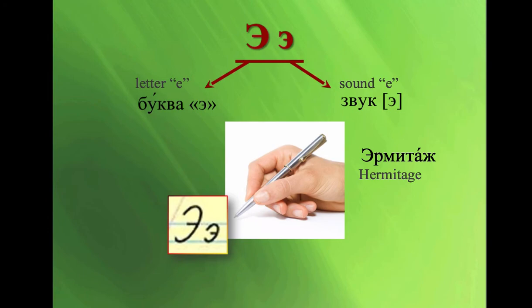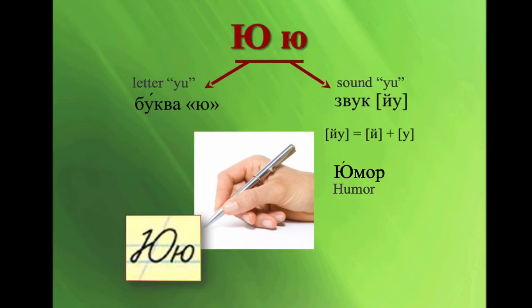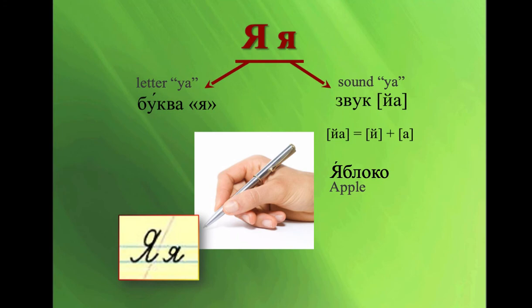Э, Э. Эрмитаж. It's an art museum in Saint Petersburg. Ю, Ю. Composed of Й, У. Ю. Юмор.